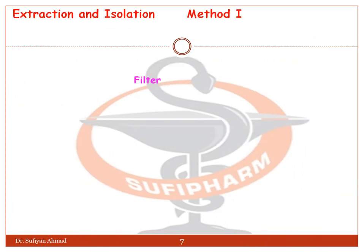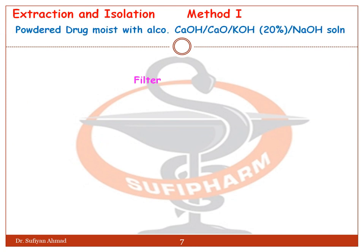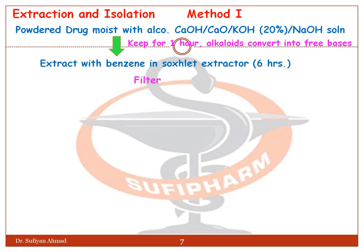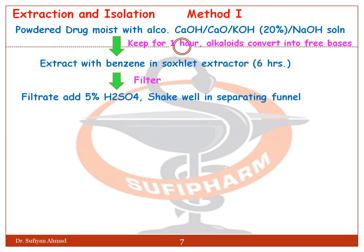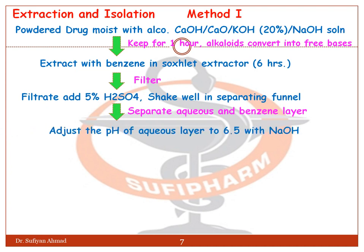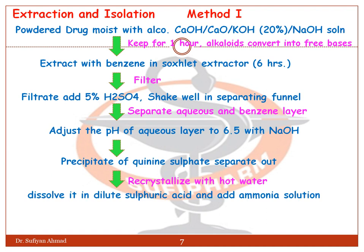Extraction and isolation — Method 1: Moisten the powdered drug with alcoholic KOH 20%, keep for 1 hour. Alkaloids convert into free bases and extract with benzene in a Soxhlet extractor for 6 hours. After complete extraction, filter it. To the filtrate, add 5% H₂SO₄, shake well in a separating funnel, and separate the aqueous and benzene layers. Adjust the pH of the aqueous layer to 6.5 with ammonia, and a precipitate of quinine sulfate separates out.